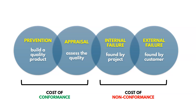With cost of conformance — just the cost to do things right — prevention is building a quality product, doing things right the first time so we don't have defects or quality issues to address. Appraisal is something like inspection: assessing the quality of the project or product as we're getting the work done. Those are costs of conformance, just to ensure we have good quality.